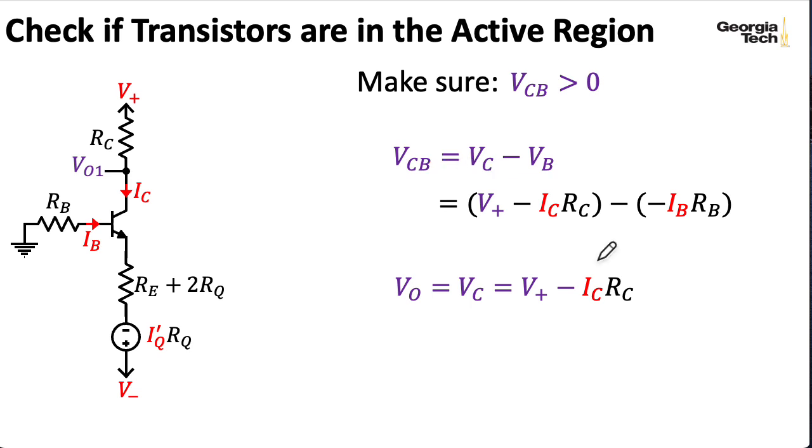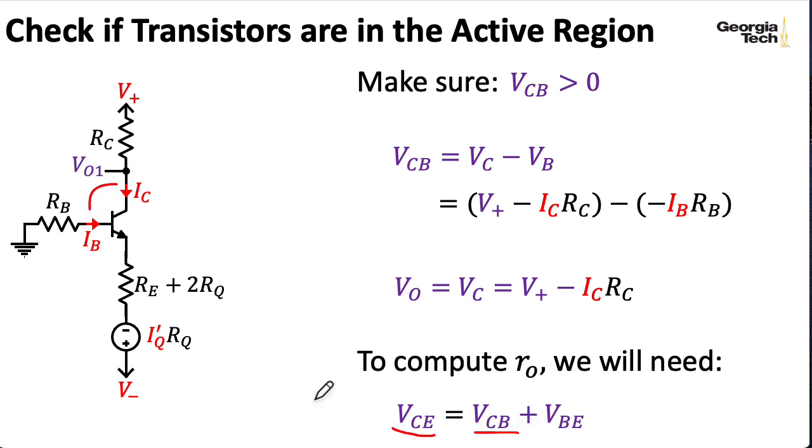Now, just the bias currents are sufficient for computing most of our small signal quantities. But to compute R0, you do need the voltage between the collector and the emitter. And for that, we can just compute the voltage between the collector and the base and add to it our assumed voltage between the base and the emitter.